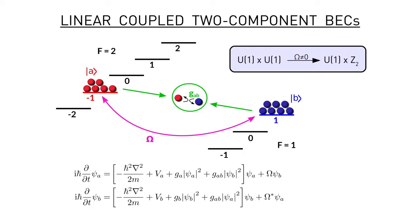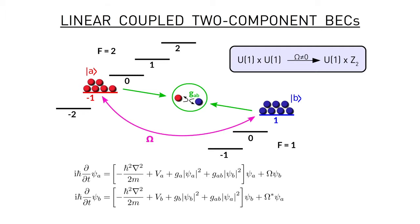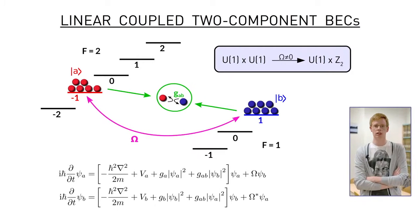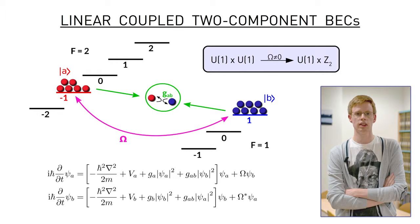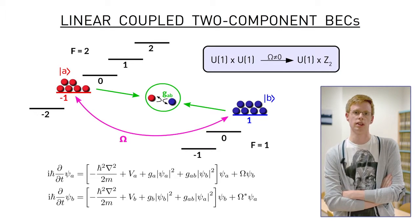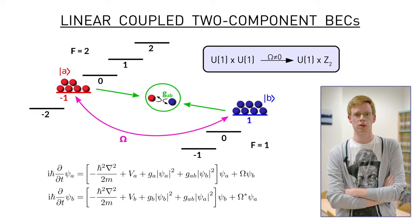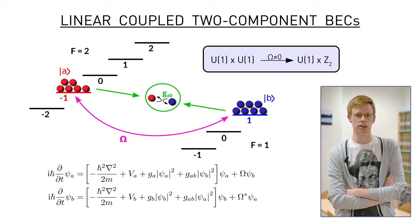Since in this case only the total number of particles is conserved, the system has a reduced symmetry with respect to normal mixtures. At zero temperature, the system is in the condensed phase and it is described by a spinor order parameter. The dynamics is governed by two coupled Gross-Pitaevskii equations, where the coupling is both in density and in phase.